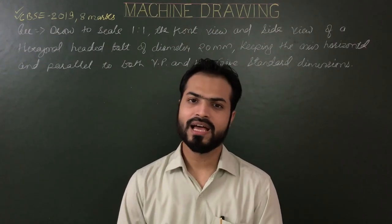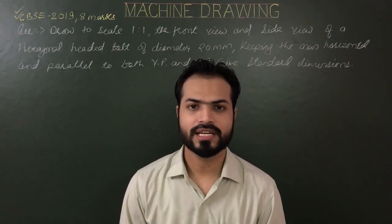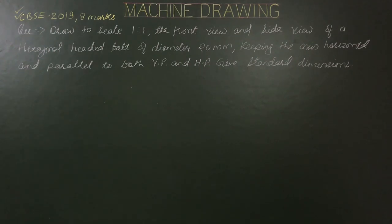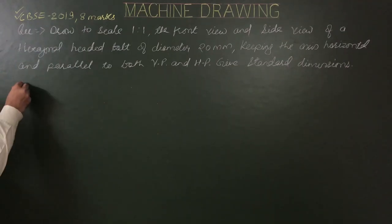Hello everyone, good morning to all. After a square headed bolt, today's topic is hexagonal headed bolt. Let's take a problem from previous year's question paper, year 2019, for 8 marks. Draw to scale 1:1 the front view and side view of a hexagonal headed bolt of diameter 20mm, keeping the axis horizontal and parallel to both VP and HP.